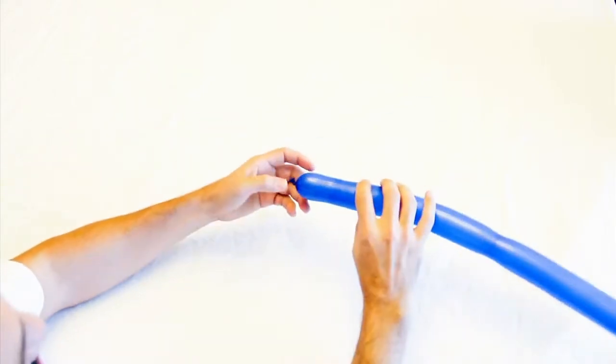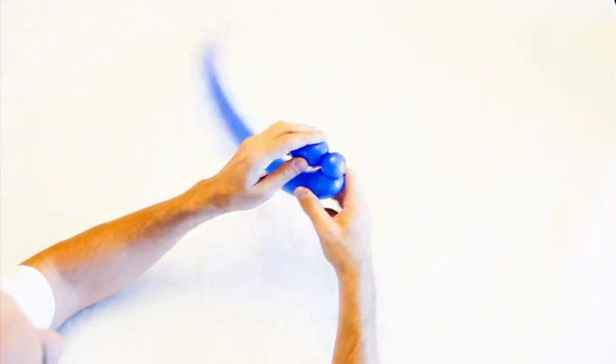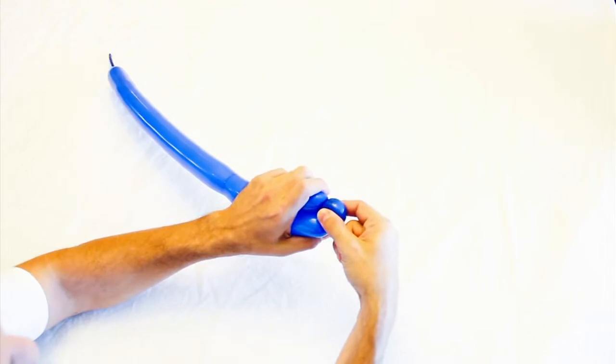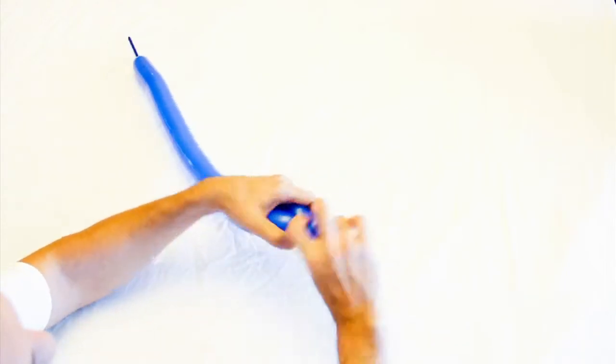The next one is going to be a pinch twist or an ear twist. Normally, a pinch twist is made like this. One bubble that you fold everything out of the way. You pinch it, which is why it's called a pinch twist. Pull up a little and twist it around a few times.